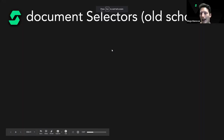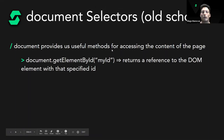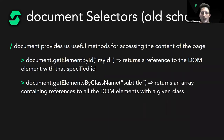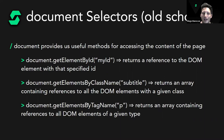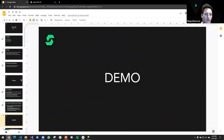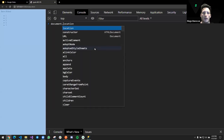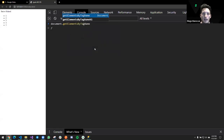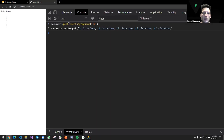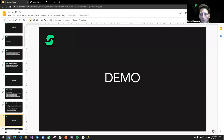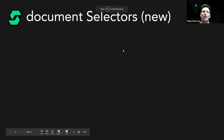We also have `document.getElementsByTagName()` which works exactly the same way but targets elements by their tag name, like 'p', 'div', or 'li'. For example, `document.getElementsByTagName('li')` returns a collection of all five list items. There's also a newer approach using querySelector and querySelectorAll, which use CSS-style selectors.